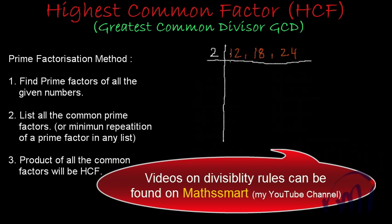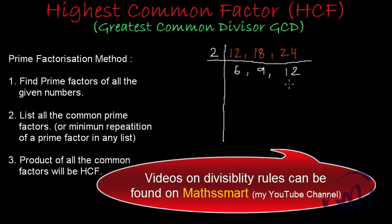If I divide 12 by 2 I get 6, 18 by 2 I get 9, and 24 by 2 I get 12. Now we have 6, 9, and 12. 6 and 12 are even numbers, they will be divisible by 2. But 9 is an odd number, it will not be divisible by 2.